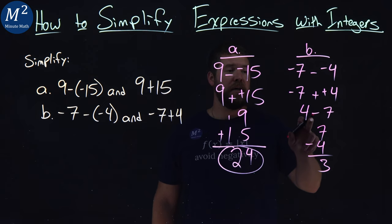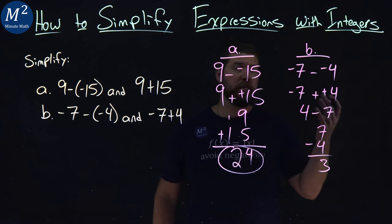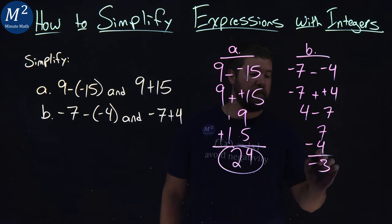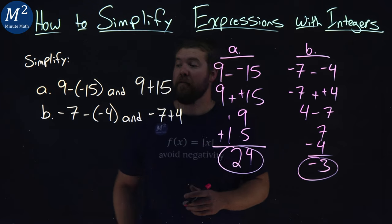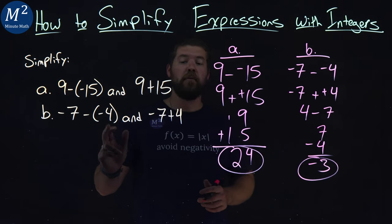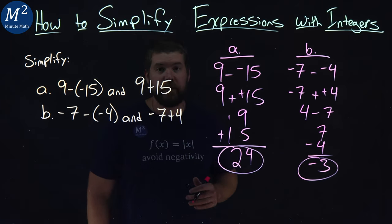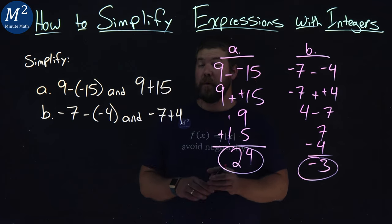But again, like I said, negative 7 and positive 4. Negative 7 is more negative than 4 is positive, so my answer has to be negative. And so there we have that negative 7 minus a negative 4, and negative 7 plus 4 is equal to a negative 3.